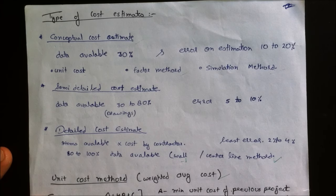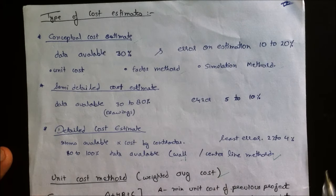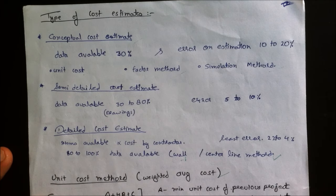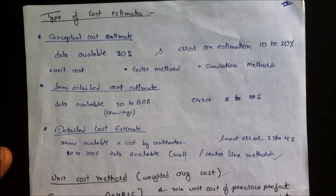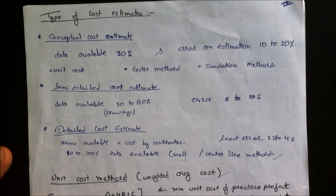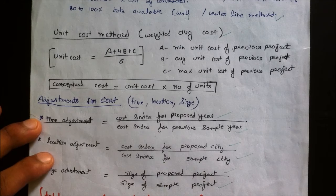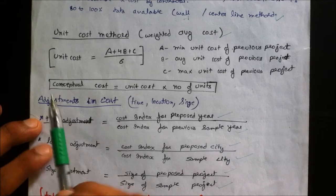In the semi-detailed cost estimate, the error is 6 to 10%. The detailed cost estimate includes each and every item — cost of the contractor and labor cost. It is done using the wall method or centerline method, and the error is very low.